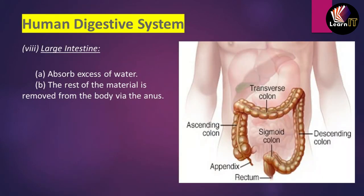The last part is the large intestine. By this point, all digestion has been completed in the small intestine, so no further digestive work occurs here. The large intestine only absorbs excess water present in the remaining food material. The rest of the material is stored in the rectum and is finally removed through the anus into the outside world.